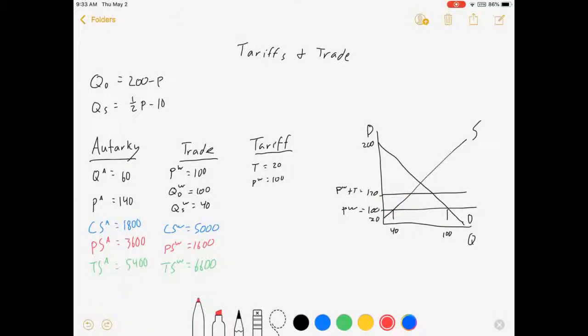So let's figure out what this is going to look like first, though. Our quantity demanded is equal to $200 minus price, $120. That's the price our consumers are paying, is $80. Our quantity supplied is equal to $1.5 times our price that people are competing with. So $120 minus $10 is $50.